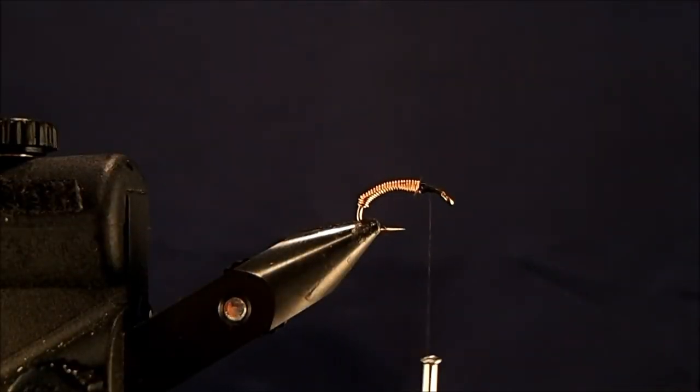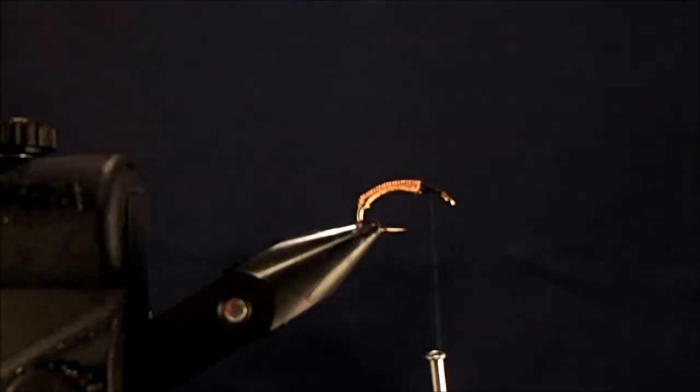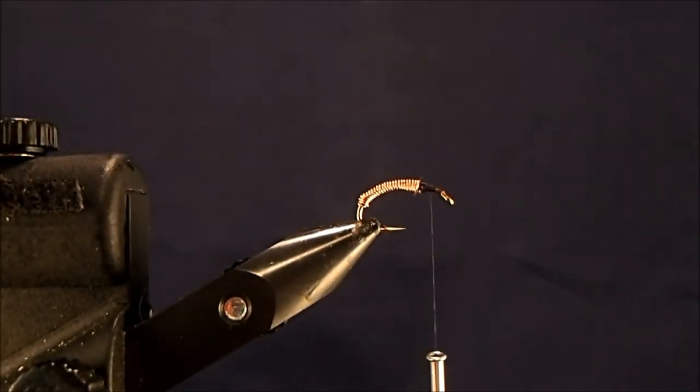Now the next piece that I want to add in is this gold holographic tinsel, and these are going to be for the sides of the fly. So I'll just cut off a section here.